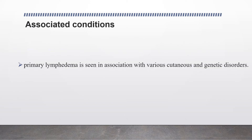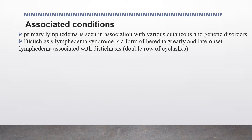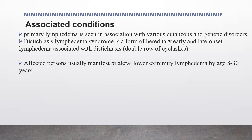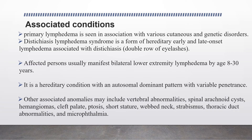Primary lymphedema is seen in association with various cutaneous and genetic disorders. Distichiasis-lymphedema syndrome is a form of hereditary early and late onset lymphedema associated with distichiasis, or a double row of eyelashes. Affected persons usually manifest bilateral lower extremity lymphedema by age 8 to 13 years. It is a hereditary condition with an autosomal dominant pattern with variable penetrance. Other associated anomalies may include vertebral anomalies, spinal arachnoid cysts, hemangiomas, cleft palate, ptosis, short stature, webbed neck, strabismus, thoracic duct abnormalities, and macroorchidism.